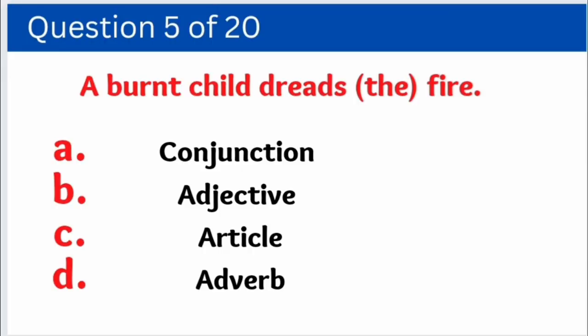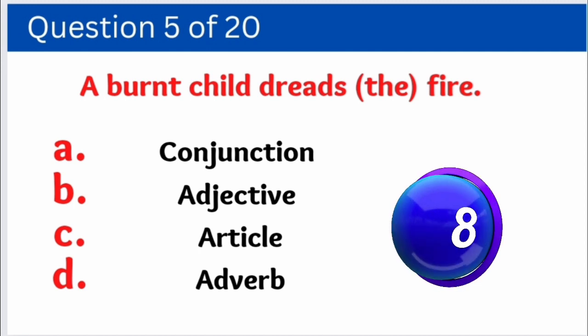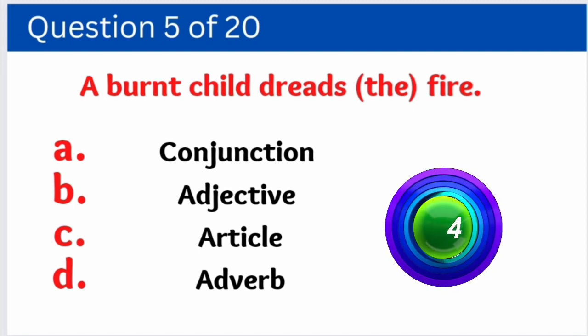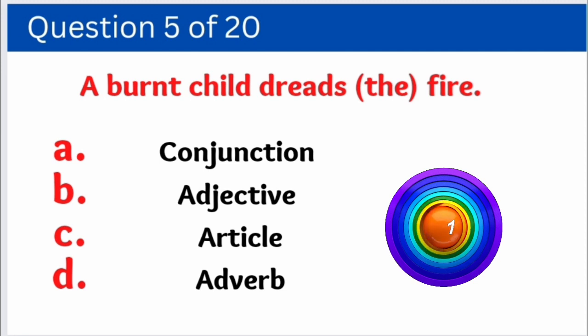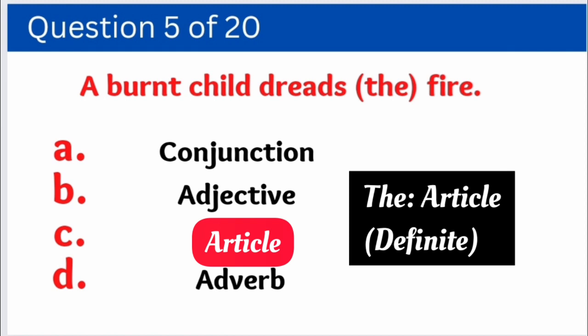Question number five is: 'A burnt child dreads the fire.' We have to identify how the word 'the' is used in this sentence. Options are: A. Conjunction, B. Adjective, C. Article, D. Adverb. And the correct answer is option C — Article.